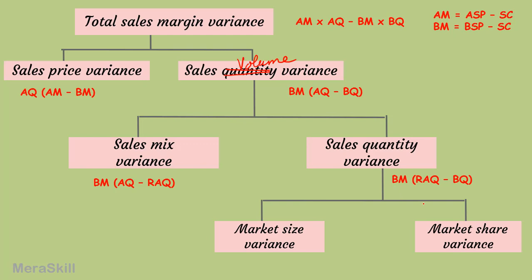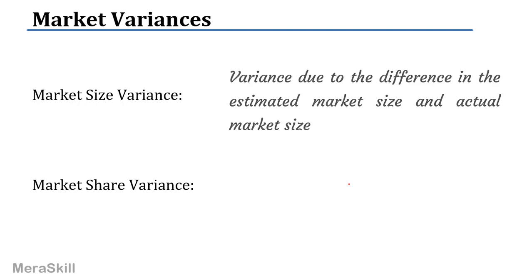The quantity variance is split into the market size variance and the market share variance. The market size variance is the variance due to the difference in the estimated market size and the actual market size. For example, suppose we deal in a particular type of computer and the industry estimate for that period was 200,000 units.